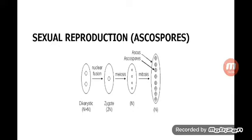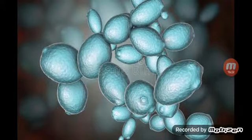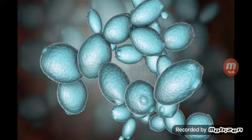After release, the ascospores regain their parent cell size at the expense of food. Whenever conditions are favorable — moisture, temperature, and availability of food — they again undergo sexual reproduction.